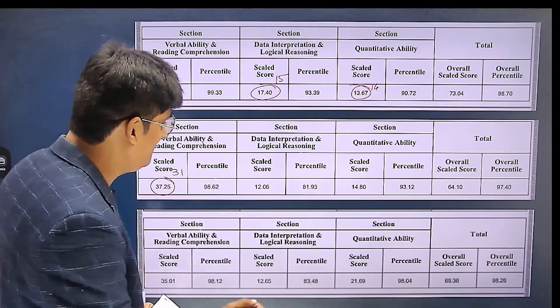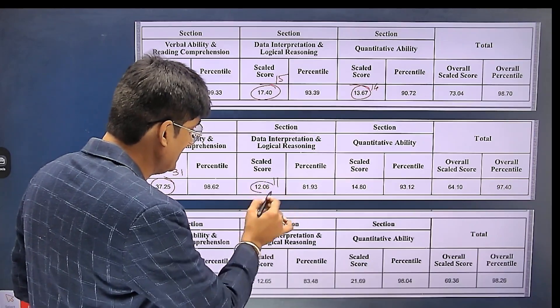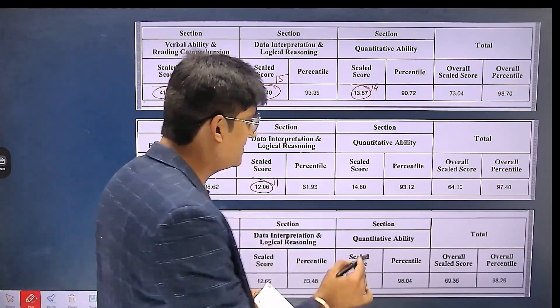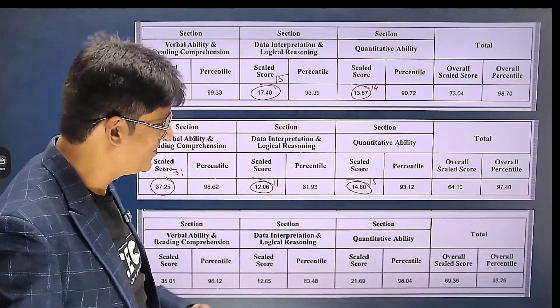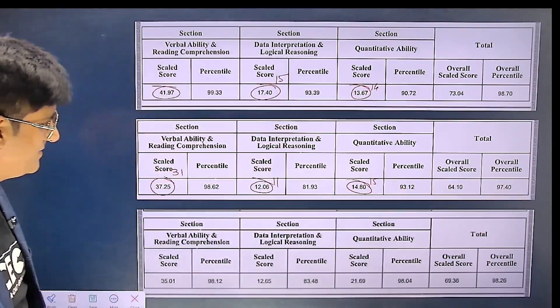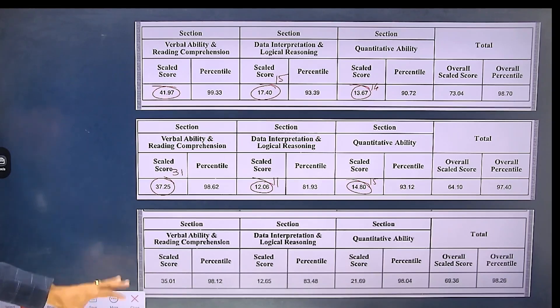In DI-LR she was getting 11 which became 12, and in QA my student was getting 15 which became 14.80. But at a score of 64 she is getting 97.4 percentile.